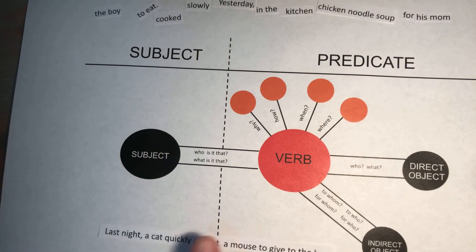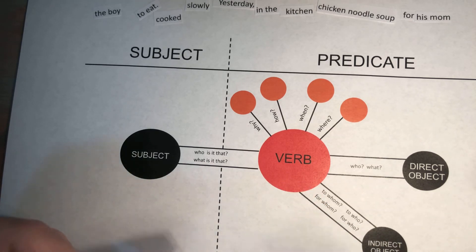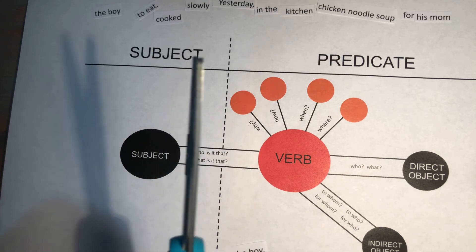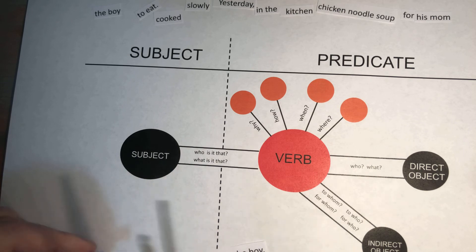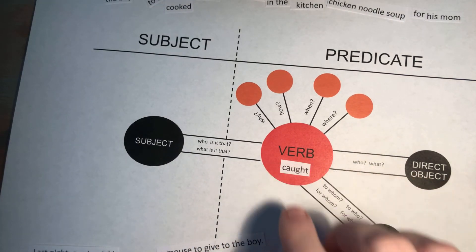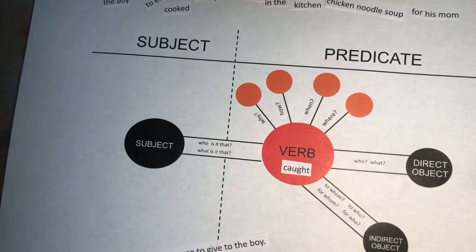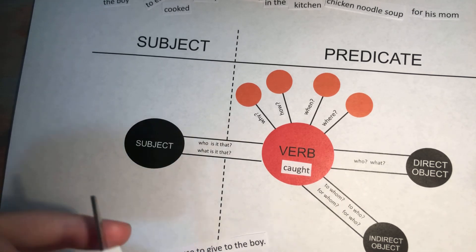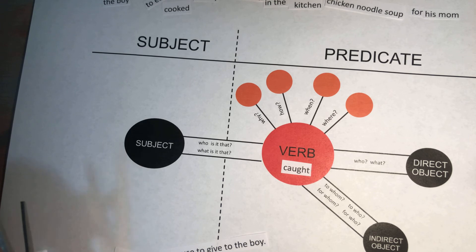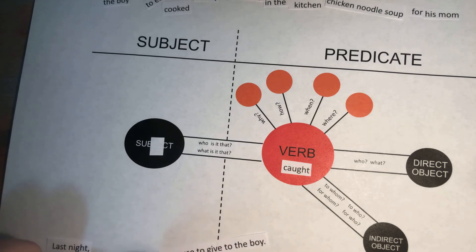Let's look at our next sentence: 'Last night a cat quickly caught a mouse to give to the boy.' Our verb is 'caught.' So let's cut out 'caught,' because we know that that is the action that the cat did. The cat caught a mouse. Who or what is it that caught something? A cat. So let's cut out 'a cat,' leaving 'last night' and 'quickly' still sitting out.